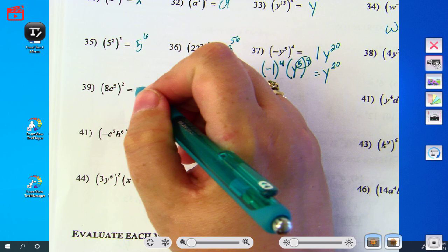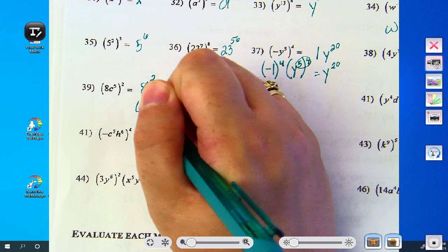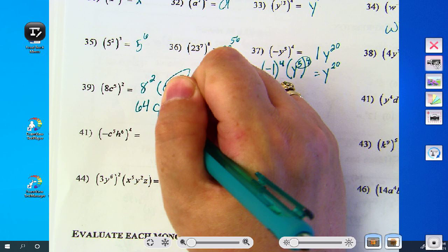Okay, so 39. The 8 has to be squared, and the c to the fifth has to be squared. 8 squared is 64. You're going to multiply, you get c to the tenth.